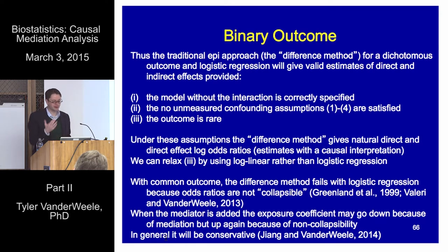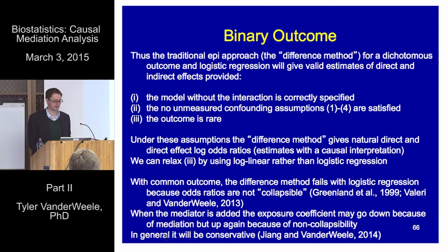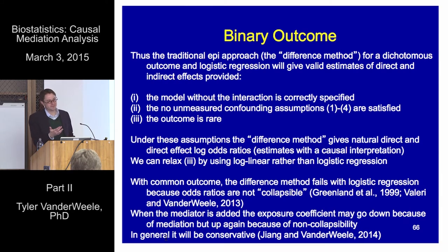We've seen a number of instances where traditional methods are fine, but now we know the assumptions we're making. Here is one instance where current practice can really go wrong, so this is an important issue to be aware of if you're sticking with traditional methods. It's not that the causal mediation analysis approach somehow solves the non-collapsibility of the odds ratio — it's an issue there too. We needed the rare outcome assumption. To get rid of that, we either have to use log binomial models to work with risk ratios directly, or use a simulation-based approach.